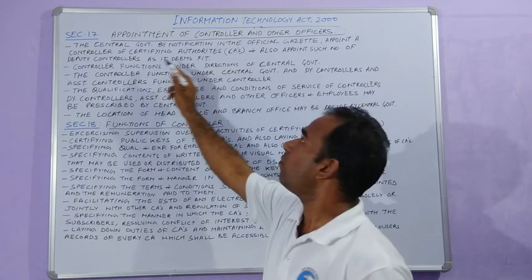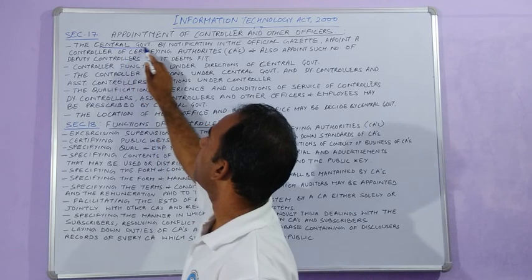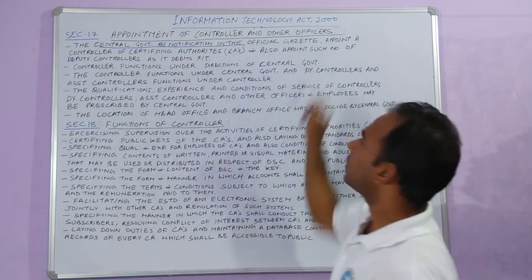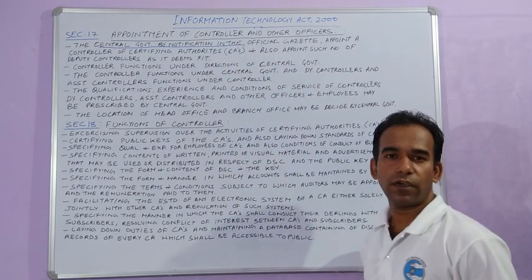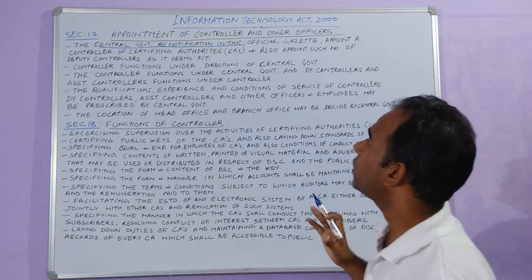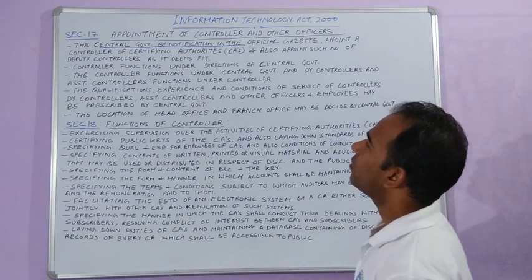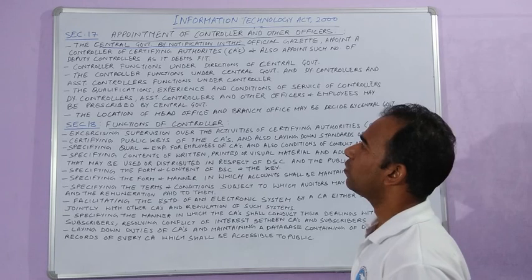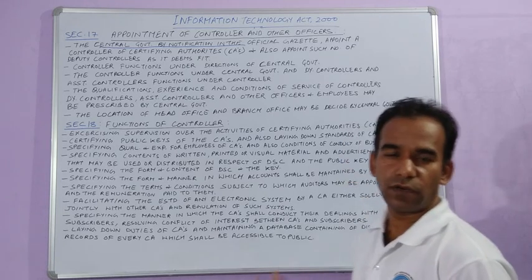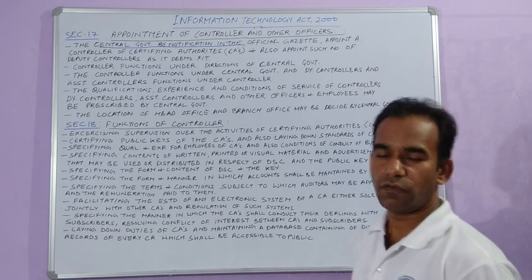The central government, by notification in the official gazette, appoints a controller of certifying authorities, and also appoints such number of deputy controllers as it sees fit.